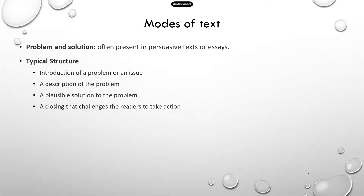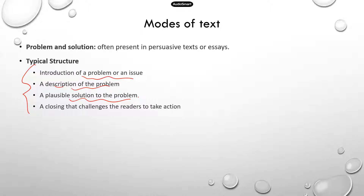Now, problem and solution — there are existing problems and what we can do to resolve them. Normally, if the author is talking about problem and solution, it follows a typical structure, though not always with some variations. Usually the author introduces the problem or issue first, describes the problem in detail, offers a possible solution, and often challenges the readers to take action.